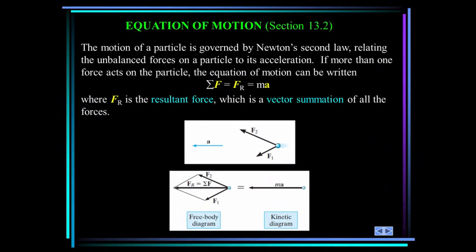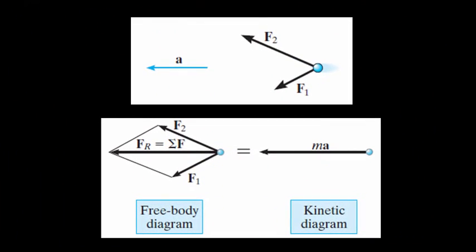Now we'll move into section 13.2, the equation of motion. So the motion of a particle is governed by Newton's second law, F equals ma. If more than one force acts on the particle, the equation of motion can be written thusly, where the sum of forces is the resultant force. So this is nothing other than the vector addition of F2 and F1, for instance, as you can see here.